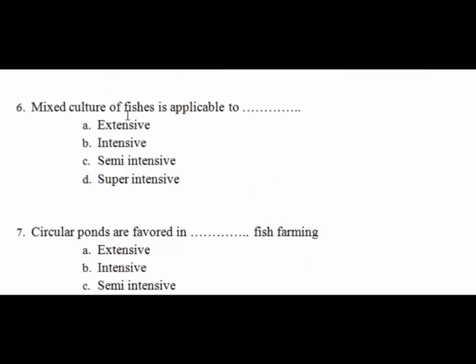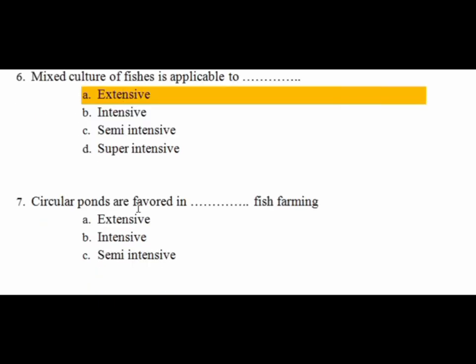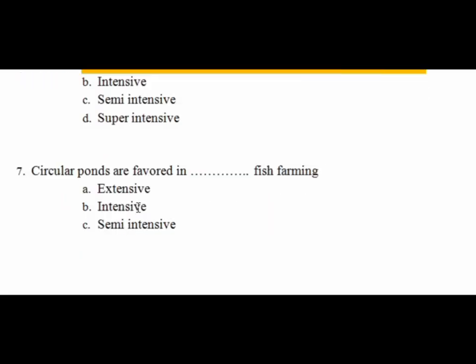Question 6: Mixed culture of fishes is applicable to which system? Mixed culture means polyculture — different species of fish cultured together in a pond. This is applicable to the traditional or extensive farming system, which commonly uses a polyculture approach.